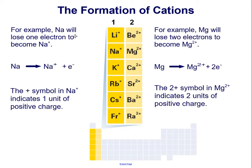For example, sodium will lose one electron to become a sodium cation. That's shown here as sodium becomes sodium cation plus one free electron. The + symbol in Na⁺ indicates one unit of positive charge. Another example is magnesium in group 2 will lose two electrons to become Mg²⁺. Here's the equation, the formula: Mg becomes Mg²⁺ plus two free electrons. The 2+ symbol in Mg²⁺ indicates two units of positive charge.